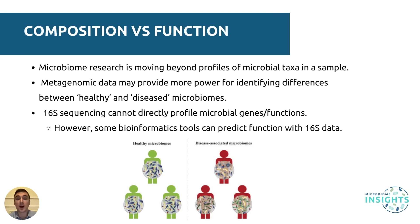Microbiome research is now moving beyond profiles of microbial taxa in a sample, known as the taxonomic composition. Evidence from large human microbiome studies suggests that functional metagenomic data may provide more power for identifying differences between healthy and diseased microbiomes. 16S sequencing cannot directly profile microbial genes or functions. However, some bioinformatic tools, such as PICRUSt, are available to predict microbiome function with 16S gene data. Shotgun metagenomic sequencing, on the other hand, can provide comprehensive data on microbial gene content. Therefore, if you are interested in microbiome functional profiles, such as antibiotic-resistant genes or carbohydrate-degrading genes, shotgun sequencing is the more suitable choice. The caveat is that current databases are limited in identifying many functional genes.